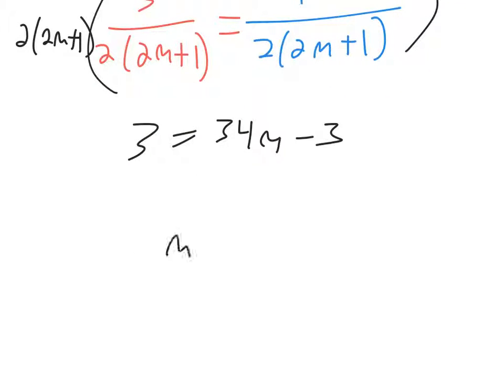And when you get down to the answer, you should have m equals 6 over 34, which is 3 over 17.